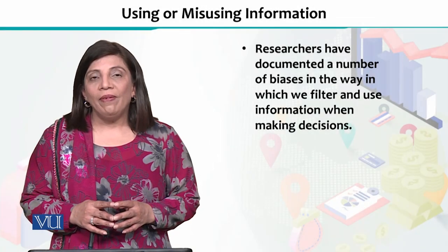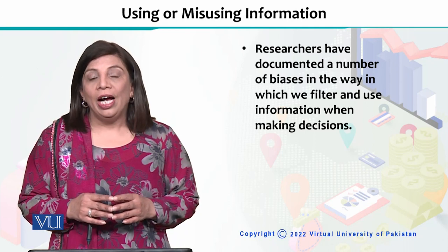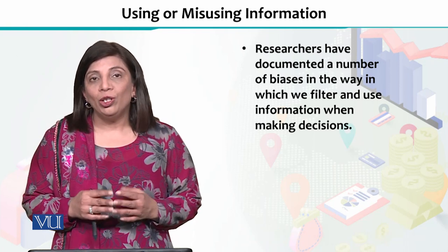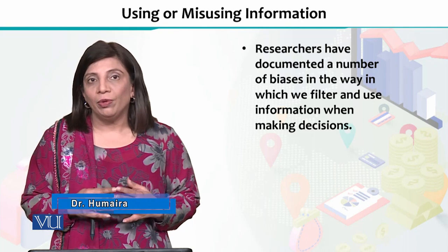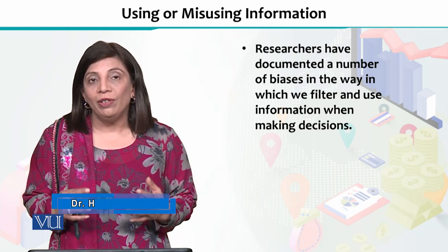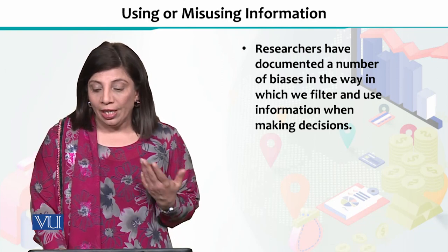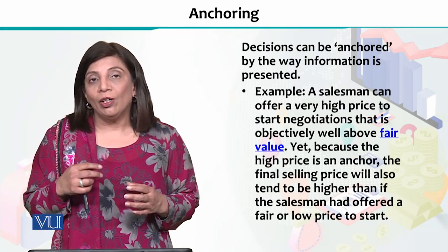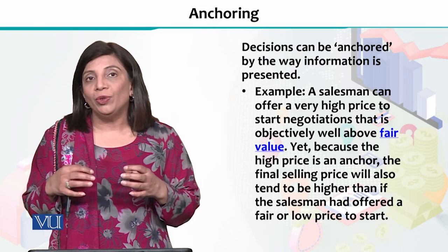In this section, I will talk about another factor that causes bias in financial decision making, and that is because of the using or misusing of information. Researchers have identified many factors that our financial decisions are not rational — they can be irrational. One important element is that we have information that we have not properly used, and we take a wrong decision, or we misuse it and take a wrong decision. There is a concept of anchoring that I am going to use to explain what using or misusing of information means.